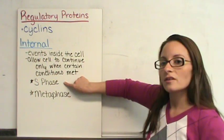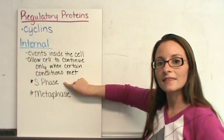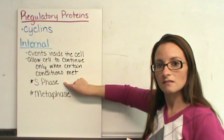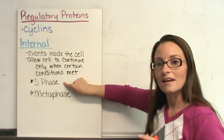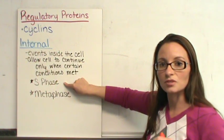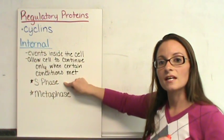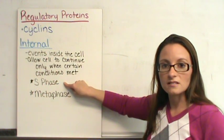There's actually a regulatory protein inside the cell that will not let the cell leave S phase and go into G2 phase until all of the DNA has been duplicated correctly. If the DNA has not been duplicated correctly, the cell cannot leave S phase.